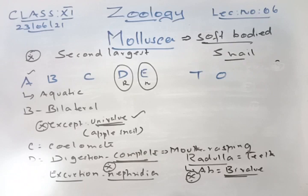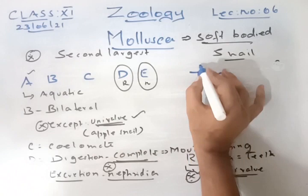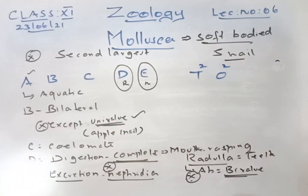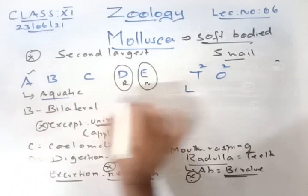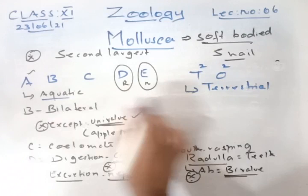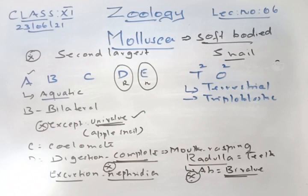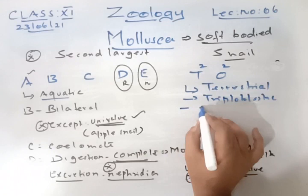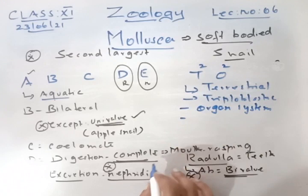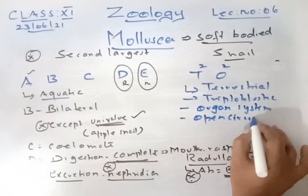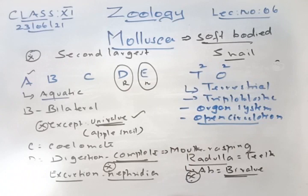T is for terrestrial (they can be aquatic as well as terrestrial) and also triploblastic. The two O's: first O is for organ system level of organization; second O is for open circulatory system. Blood is not carried inside vessels. However, there is an exception — Cephalopods do not have an open circulatory system. Examples of Cephalopods include octopus and cuttlefish.